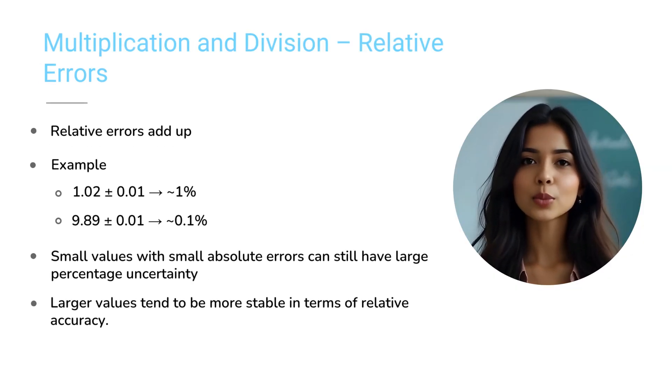Rule 2: In multiplication or division, the relative errors add up. Let's break it down with examples. Example 1: You measure a small mass as mass equals to 1.02 grams, plus or minus 0.01 grams. To find the relative error, divide the absolute error by the value. Relative error equals to 0.01 divided by 1.02. That is 0.0098, or about 1 percent.